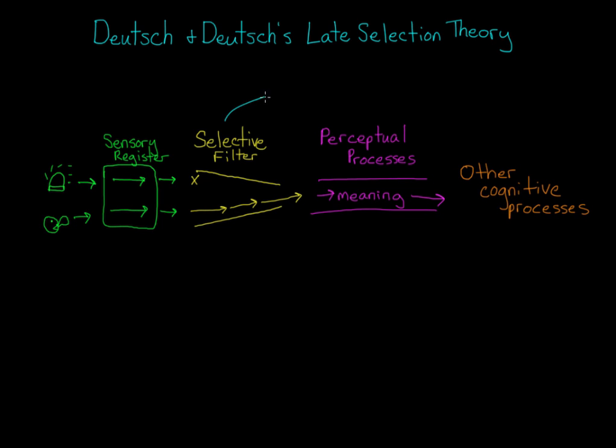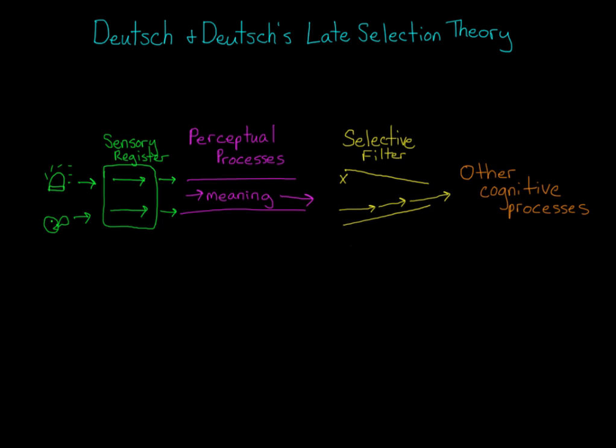A couple folks named Deutsch and Deutsch proposed a late selection theory, which moved Broadbent's selective filter to after the perceptual processes. This means that you actually do register and assign everything meaning, but then your selective filter decides what to pass on to your conscious awareness.